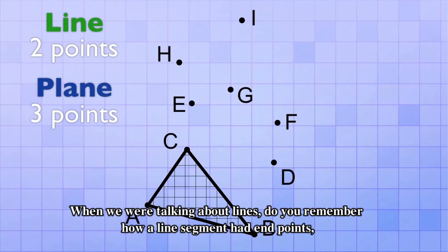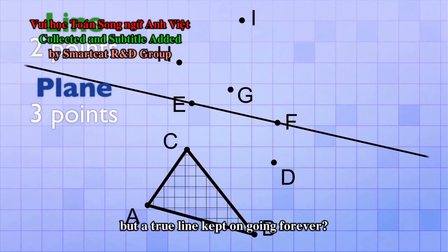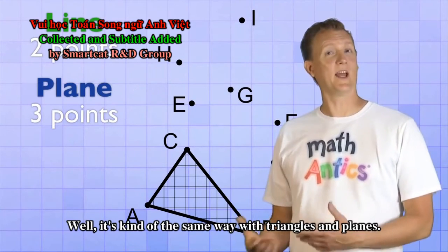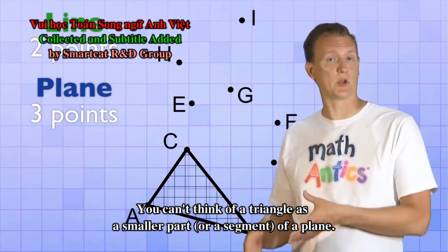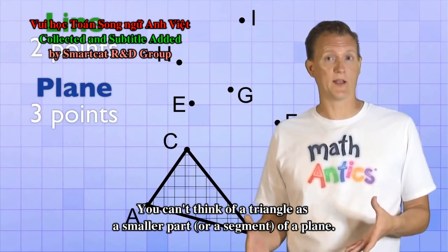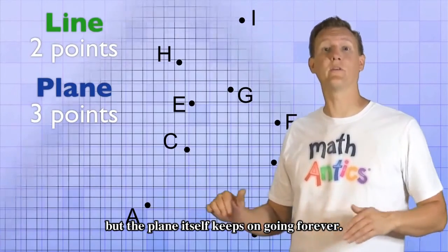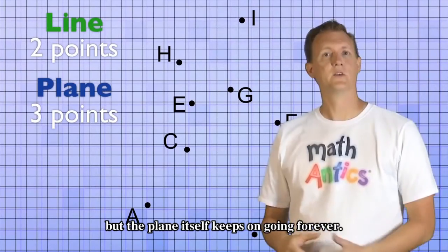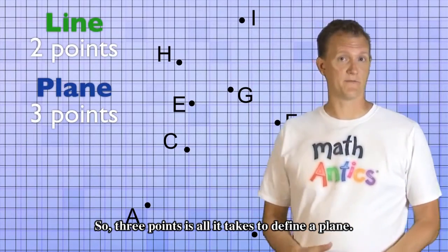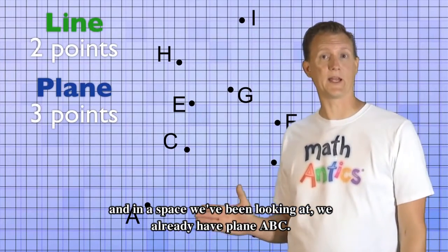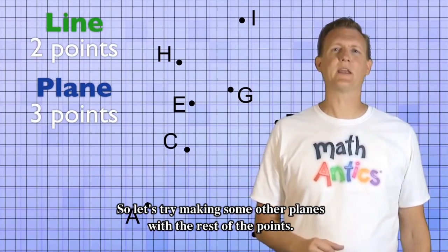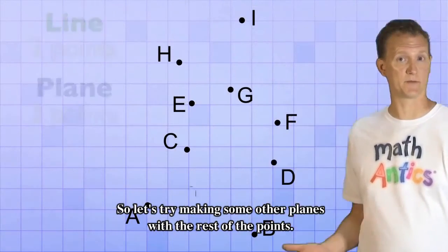When we were talking about lines, do you remember how a line segment had endpoints, but a true line kept on going forever? Well, it's kind of the same way with triangles and planes. You can think of a triangle as a smaller part or a segment of a plane, but the plane itself keeps on going forever. So three points is all it takes to define a plane. And in the space we've been looking at, we already have plane ABC. So let's try making some other planes with the rest of the points.